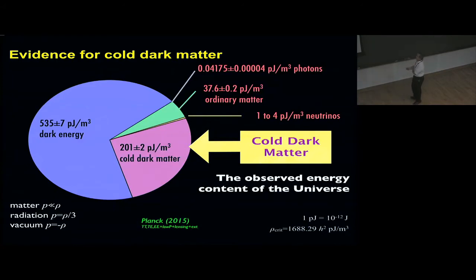It's about 200 picojoules per cubic meter in cold dark matter and about 500 picojoules per cubic meter in dark energy. These portions are distinguished by their equation of state, the relation between the pressure and the energy density.